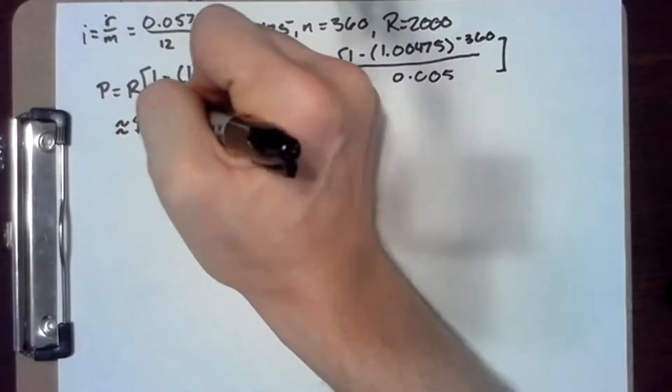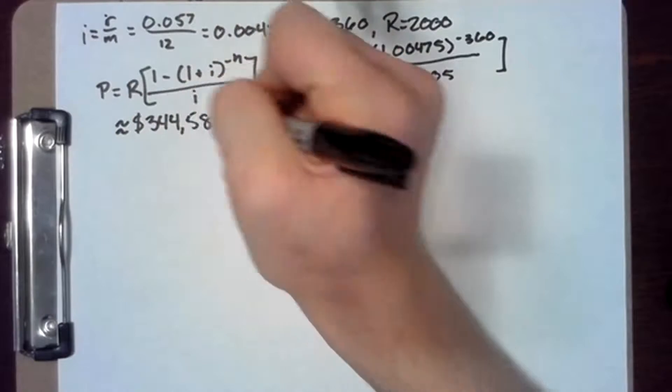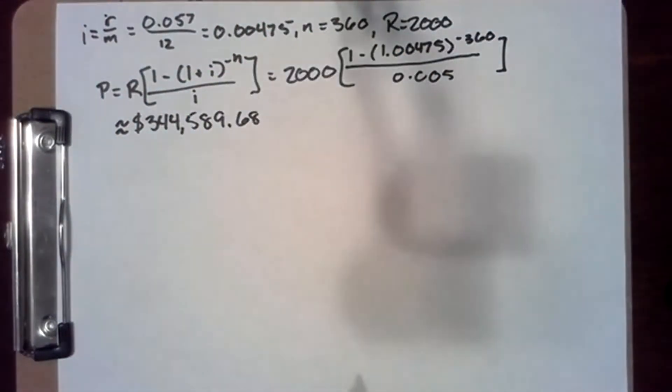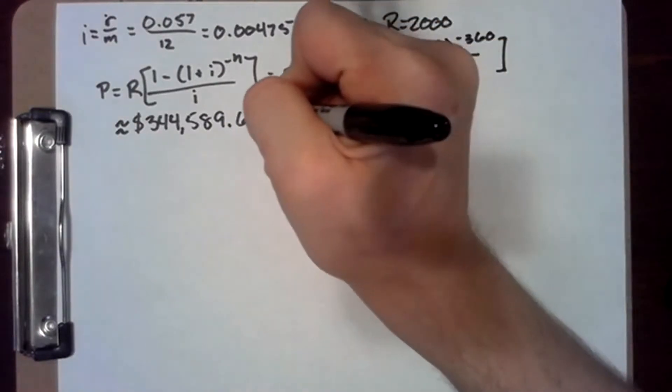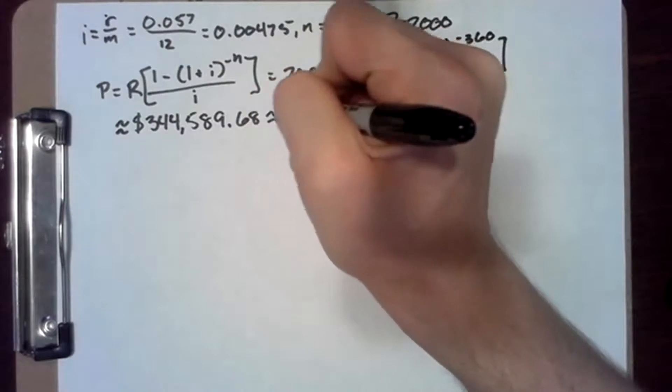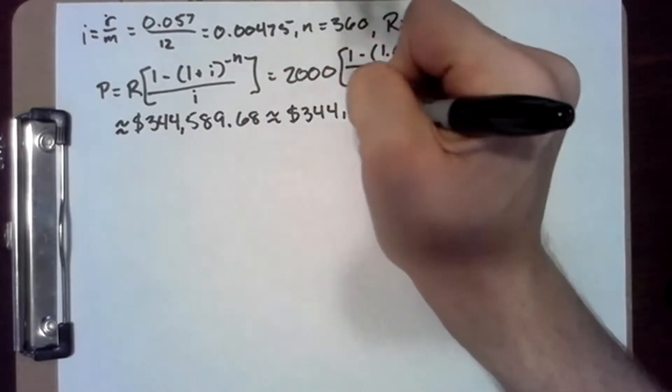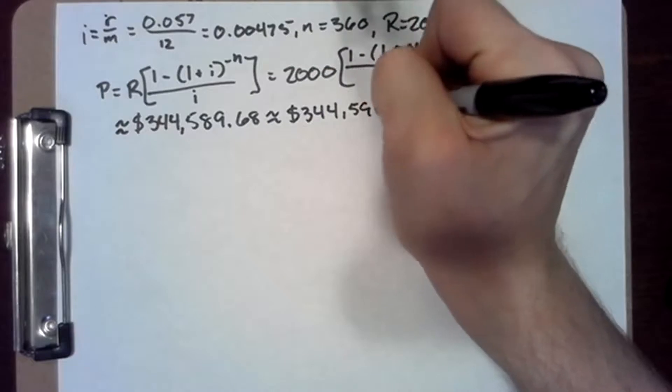Again, we're going to round that off to the nearest dollar, which is $344,590.